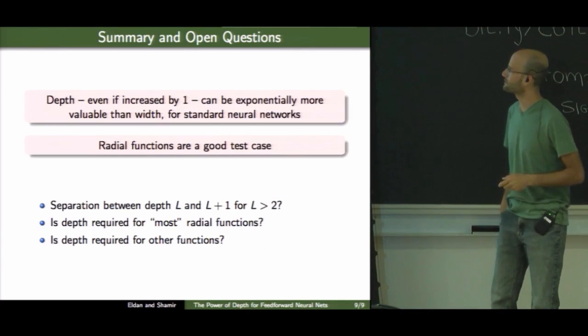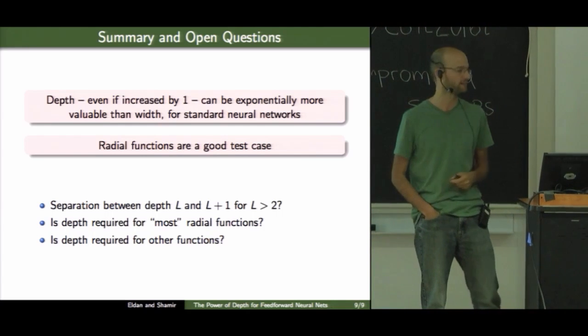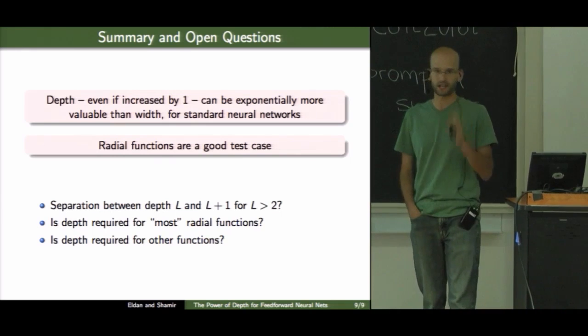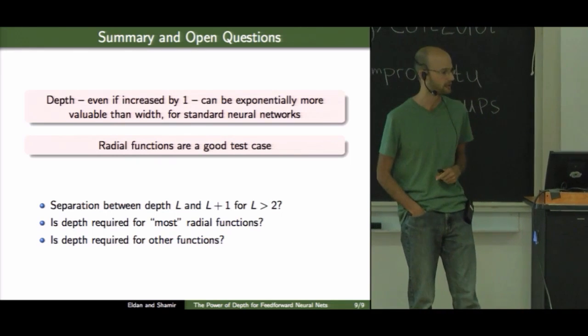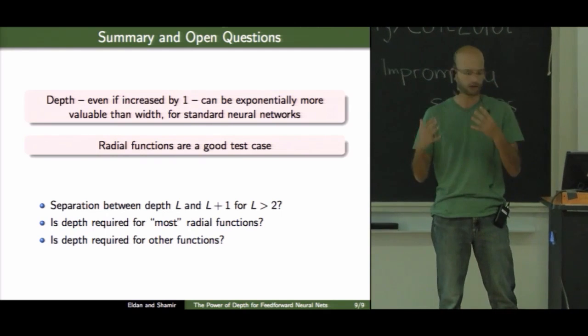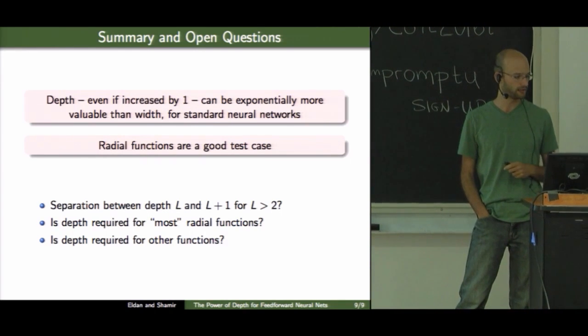So to summarize, we showed that depth, even if it's increased just by one, can be exponentially more valuable than width. And this is for standard plain vanilla neural networks. And we did it through looking at radial functions, which I think are kind of reasonable and are a good test case.